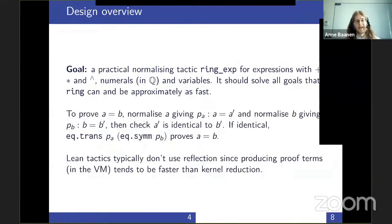It is a normalizing tactic. To prove an equality like a equals b, where a and b can be very complicated expressions, we put both in normal forms. We normalize a and get a proof that a equals some normal form a'. We do the same with b and get a proof that b equals some normal form b'. Then if a' and b' are syntactically identical, which is easy to check in the tactic, we can apply transitivity and symmetry to get the proof of a equals b.